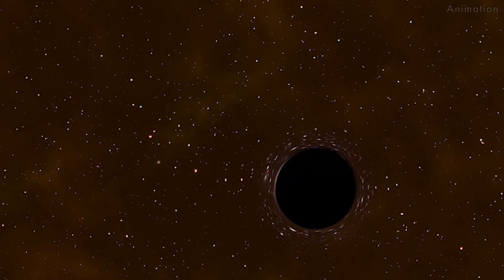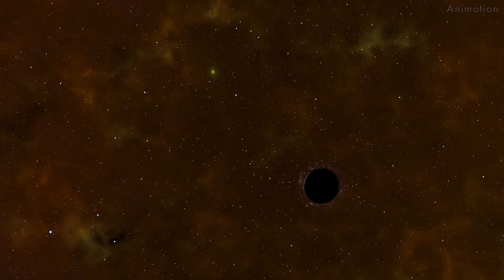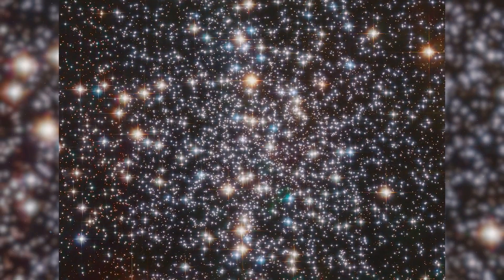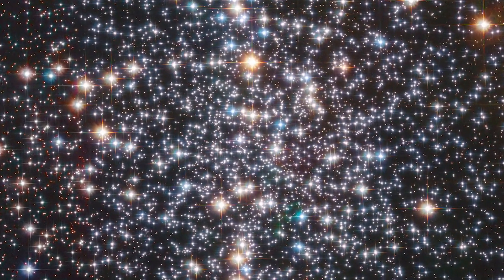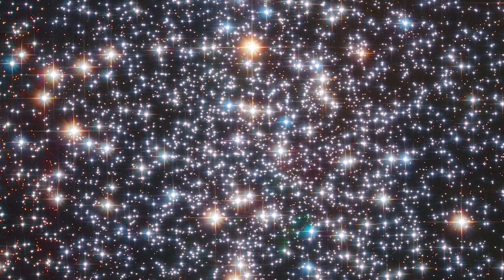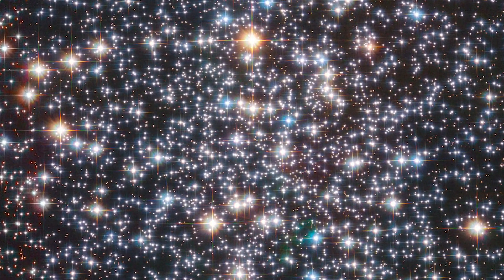Astronomers using NASA's Hubble Space Telescope have possibly detected one of these elusive intermediate mass black holes in the core of the globular star cluster Messier 4, located 6,000 light-years away from Earth.